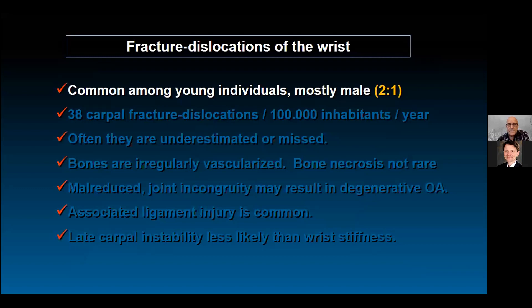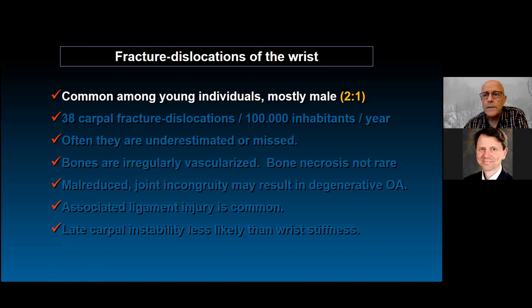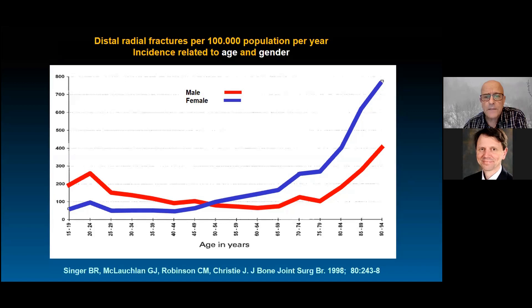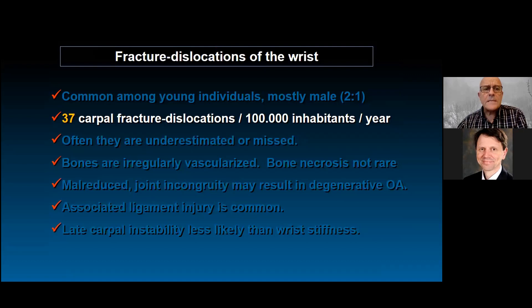Fracture dislocations of the wrist are common among young individuals, not common among aged individuals, and much less in those with bone-related problems — usually mostly male in a ratio of 2 to 1. The incidence from Norway is about 37 carpal fracture dislocations per 100,000 inhabitants per year.